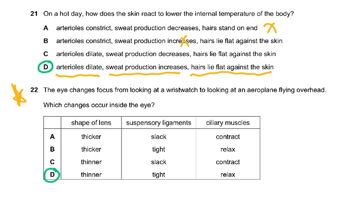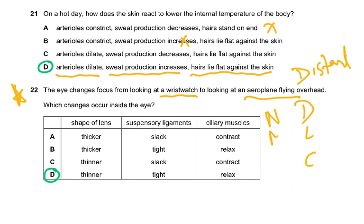Question twenty-two is also mentioned in the examiner's report — weaker candidates indicated that contraction of the ciliary muscle causes the lens to become thinner, which is a misunderstanding. The mnemonic is: DLC — distant, less convex; NMC — near, more convex. For distant vision, the lens becomes thinner, suspensory ligaments become taut, and the ciliary muscle relaxes. Please review the eye chapter video for clarity. That ends this video — we'll continue the rest of the questions in the second video.